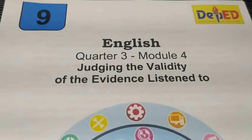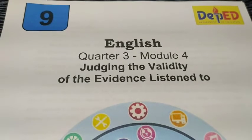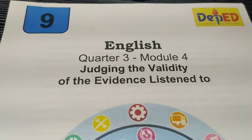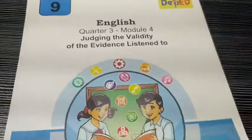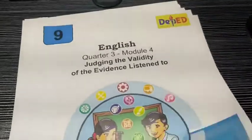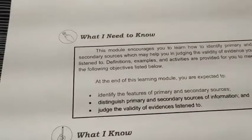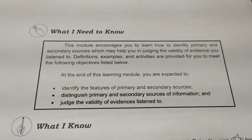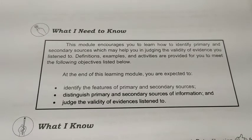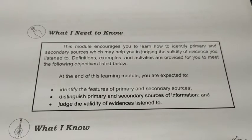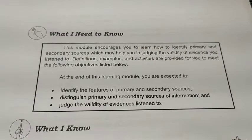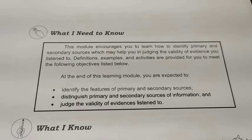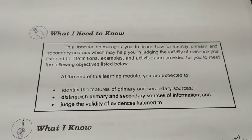Good day, and now we will proceed to Module Number 4 of the 3rd quarter, which is all about judging the validity of the evidence listened to. We will start on page number 1. The first thing we should do is know the objectives of this module. At the end of this learning module, you are expected to: identify the features of primary and secondary sources, distinguish primary and secondary sources of information, and judge the validity of evidences listened to.